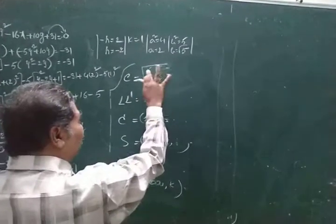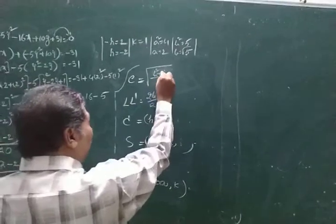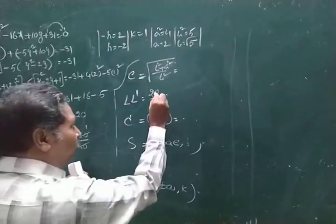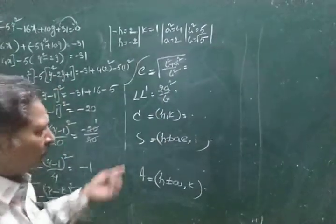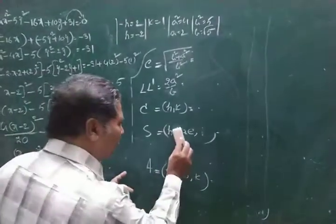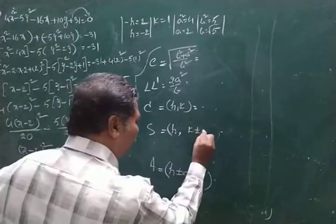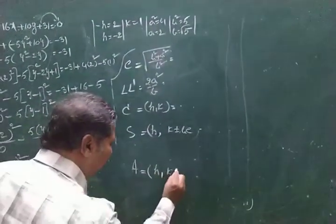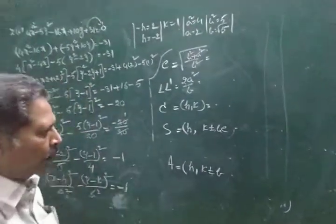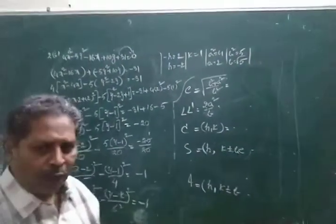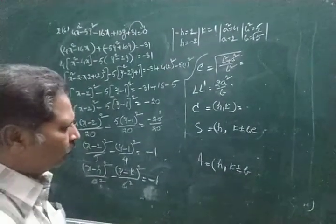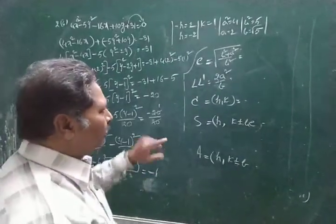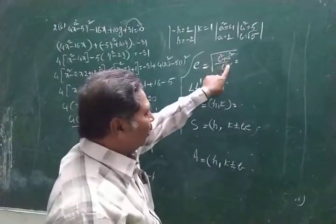For this minus 1 hyperbola, apply the a less than b formulas. The eccentricity e equals under root of b squared plus a squared by b squared. The length of latus rectum is 2a squared by b. Center is h comma k, and foci are h comma k plus or minus b times e.